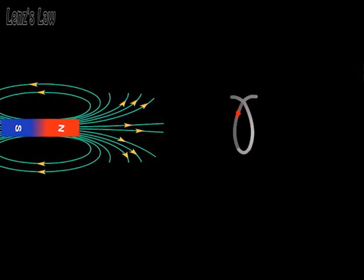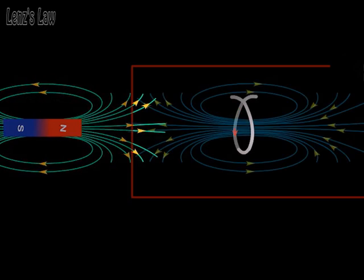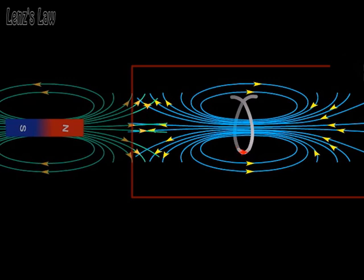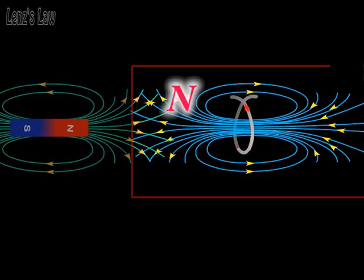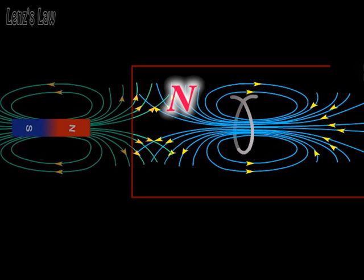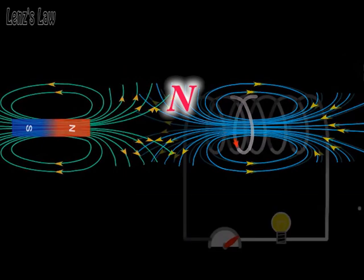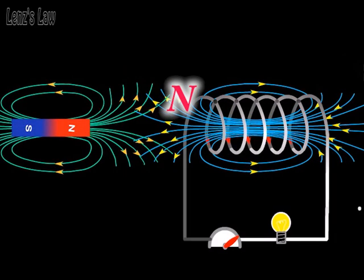As the magnet moves towards the solenoid, this induces current in the solenoid. The induced current creates a magnetic field. The loop produces a north pole to oppose the magnetic field of the approaching north pole of the magnet.